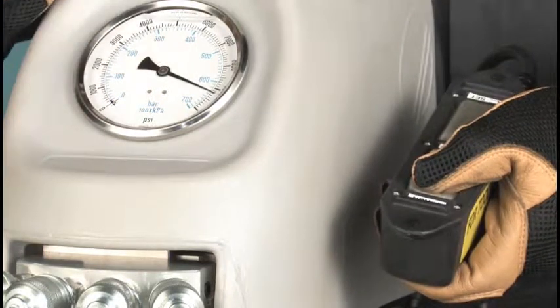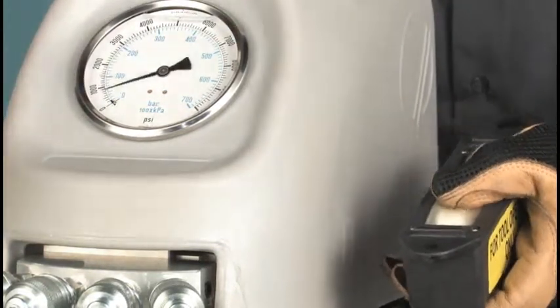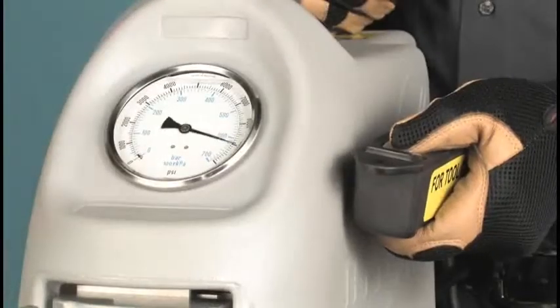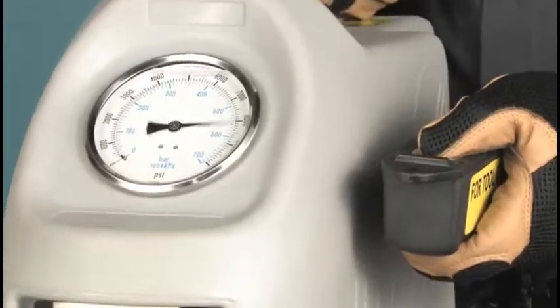Each time you release the button, the gauge will read about 1000 PSI, indicating the return pressure. This is controlled by an internal limit valve, which you cannot change.